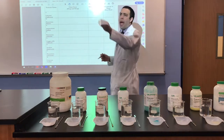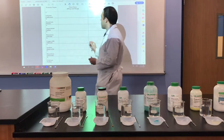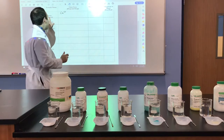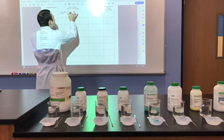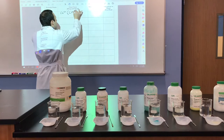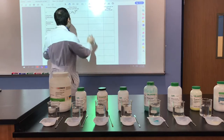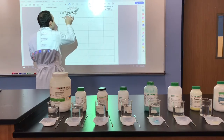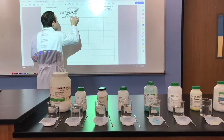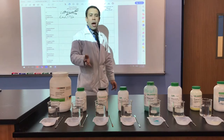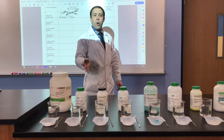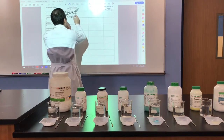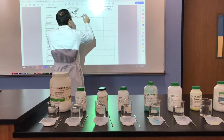Calcium, since it's in group 2, element number 20, it has a charge of positive 2. Carbonate on Table E is a polyatomic — CO3 in parentheses — 2 minus. I perform the criss-cross drop-swap method and get Ca2(CO3)2. But remember, ionic bonds form formula units — the lowest whole number ratios of cations to anions. So 2 and 2 reduces to 1 and 1: CaCO3.